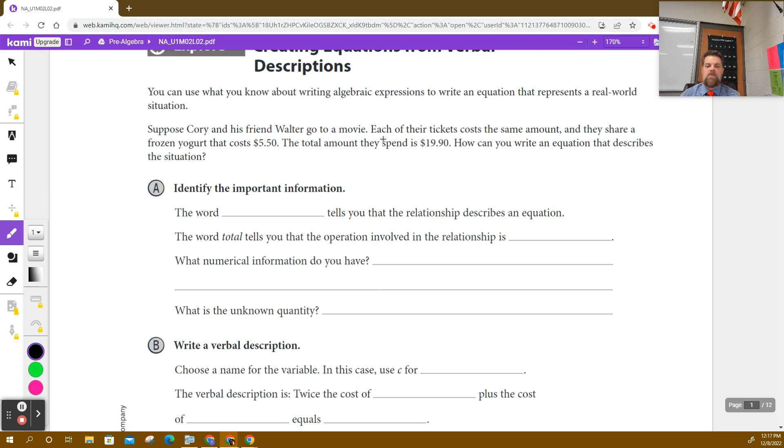Suppose Corey and his friend wanted to go to a movie. Each of their tickets cost the same amount. And they share frozen yogurt that cost $5.50. The amount they spend is $19.90. And you write an expression that describes the situation. The word 'is' tells you something. 'Is' usually means equals. The word 'total' tells you that the operation involved in the relationship is addition. Sometimes there's multiplication, but in this particular case, we're going to add a couple things.